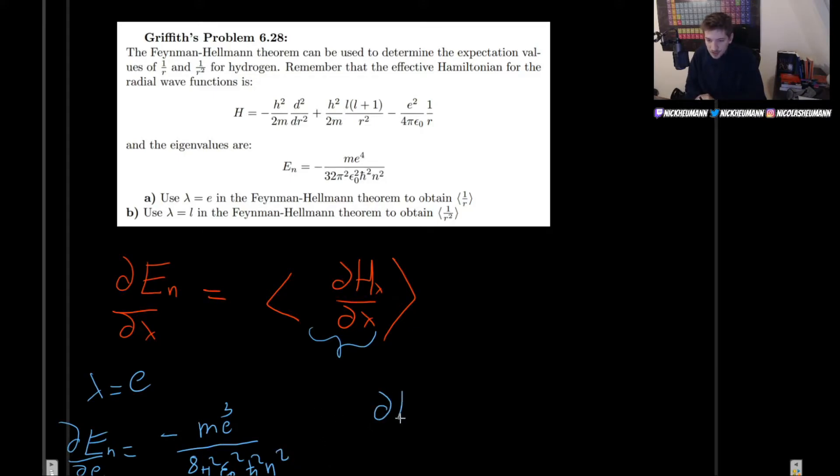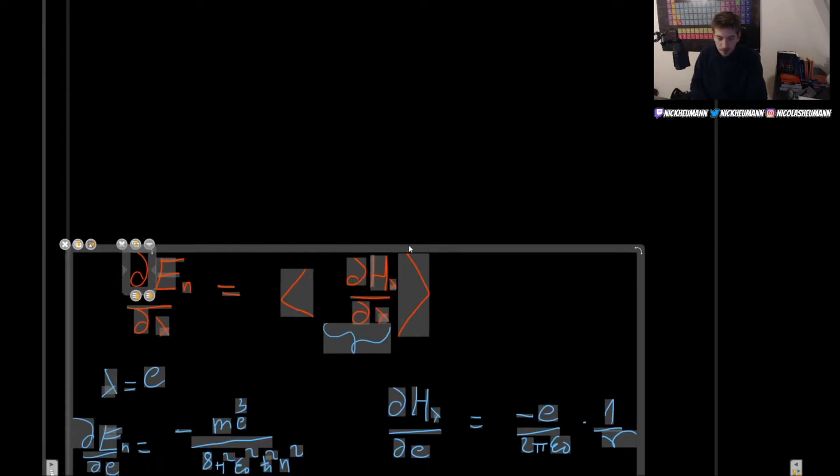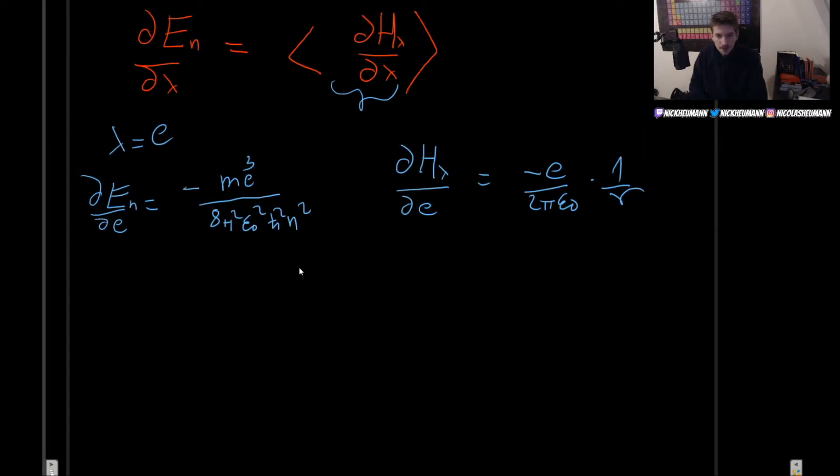And what about the Hamiltonian? So, now the derivative of the Hamiltonian with respect to e will be minus, the 2 will cancel out with the 4. So, we get minus e divided by 2 pi epsilon 0 times 1 over r. So, let us now go to the next page and plug all of this into the Feynman-Hellman theorem. All right. So, let's plug it in.